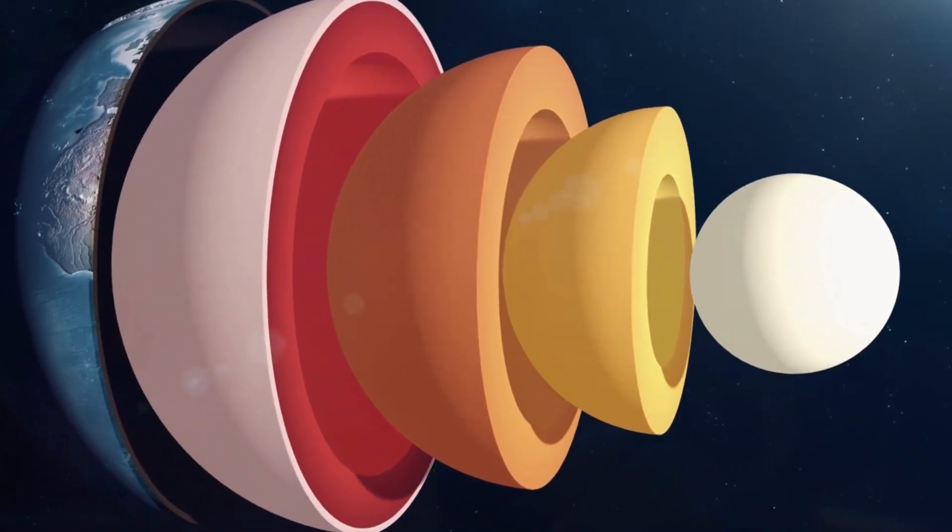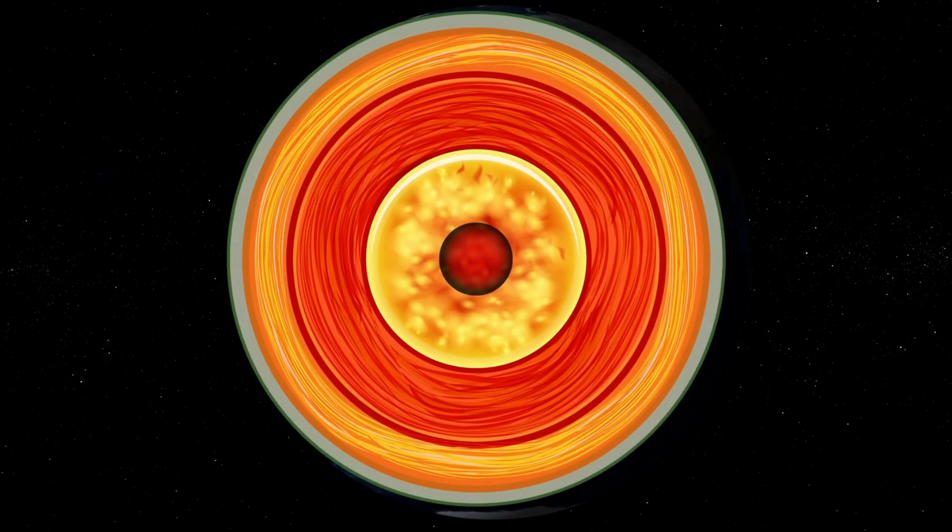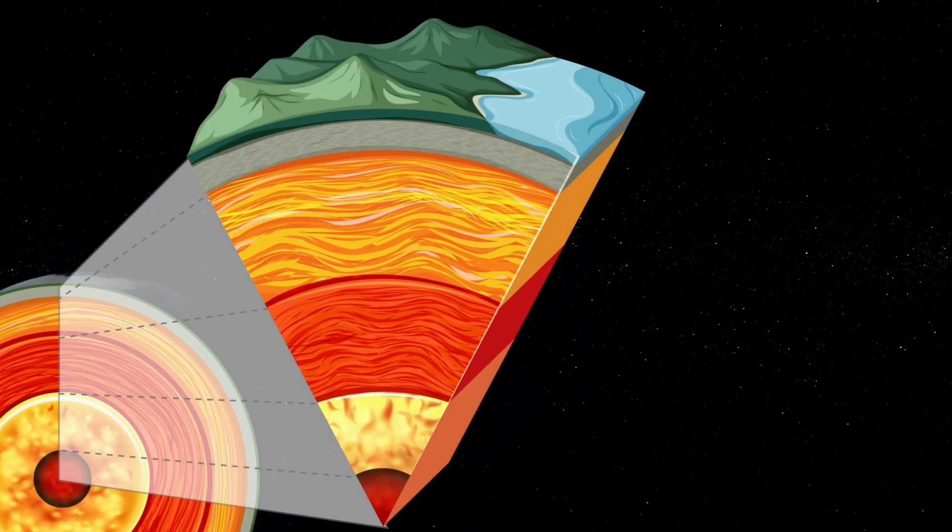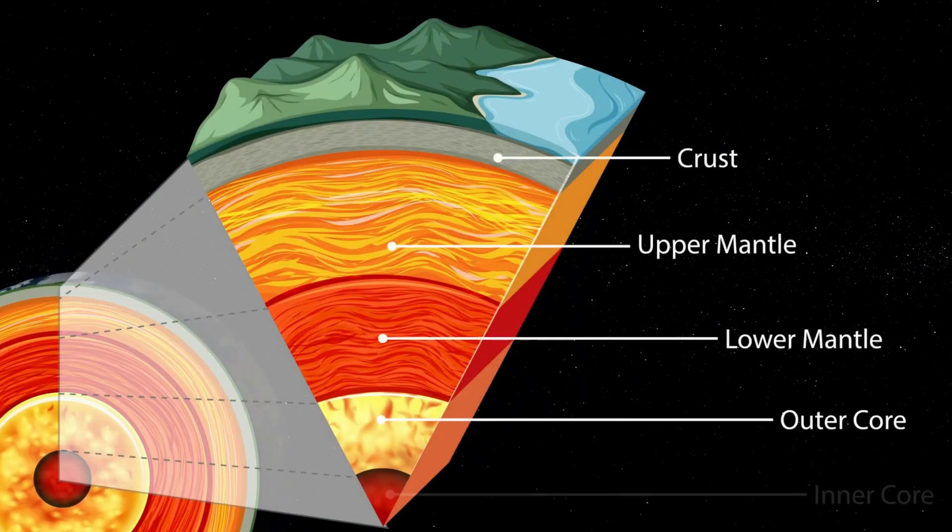Understanding the inner workings of our planet is crucial for understanding its habitability, and that's why scientists have been studying the four known layers: the crust, mantle, outer core, and inner core, and how they interact with each other.